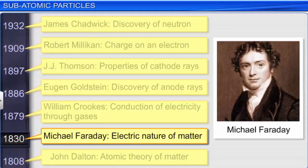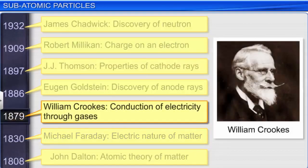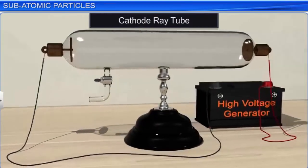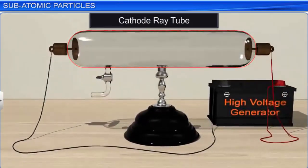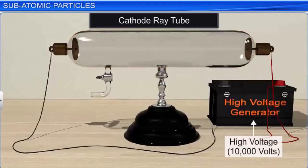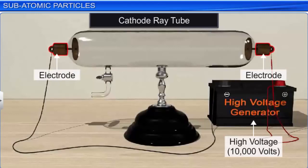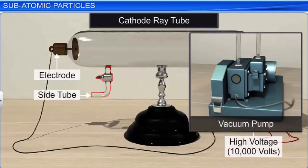The structure of an atom was demystified only when William Crookes conducted experiments to study electrical discharge through gases in 1879. The apparatus consisted of a glass discharge tube — now called cathode ray tubes or Crookes tubes — and a high voltage source of 10,000 volts. The discharge tube was sealed at both ends and fitted with thin metal pieces called electrodes at each end. It had a side tube fitted with a stopcock connected to a vacuum pump to control the pressure of gas inside the tube.